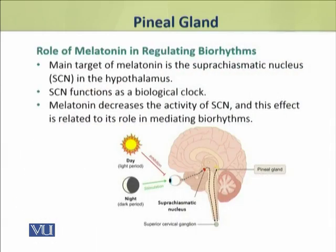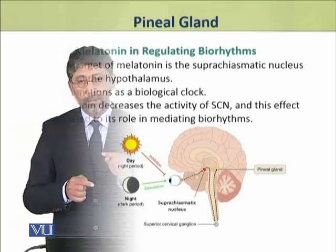The main target of melatonin is the suprachiasmatic nucleus in the hypothalamus, which actually functions as a biological clock. Melatonin decreases the activity of this part of the hypothalamus, and this is related to the effect of melatonin in mediating biorhythms.